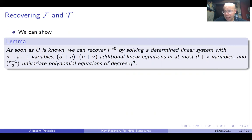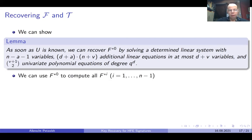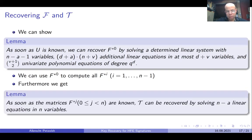Having found this equivalent linear transformation S, the remainder of the attack is relatively easy. We can show that once U is known, we can recover the matrix F*_0 by solving a determined linear system with N - a - 1 variables, D + a times N + V additional linear equations in at most D + V variables, and V+1 choose 2 univariate polynomial equations of degree at most q^D. After finding F*_0, we can easily compute all the other matrices F*_i, and then recover the map T by solving N - a linear equations in N variables.